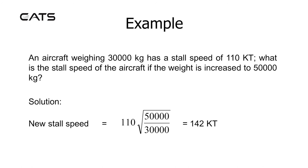An aircraft weighing 30,000 kilograms has a stall speed of 110 knots. What is the stall speed if the weight is increased to 50,000 kilograms? Divide 50,000 kg by 30,000 kg and take the square root of the answer. Then multiply by the old stalling speed of 110 knots to find 142 knots as the new stalling speed.